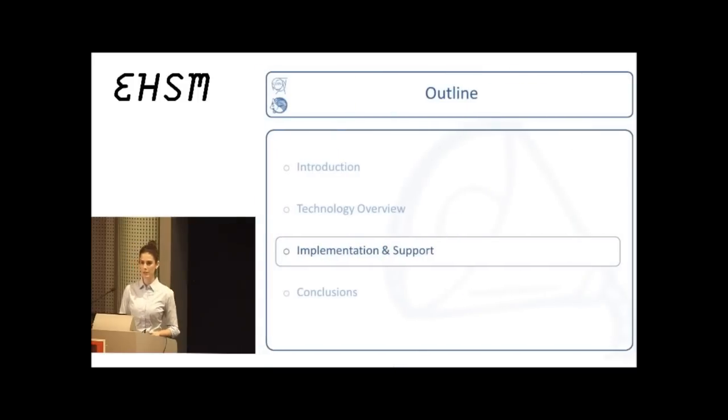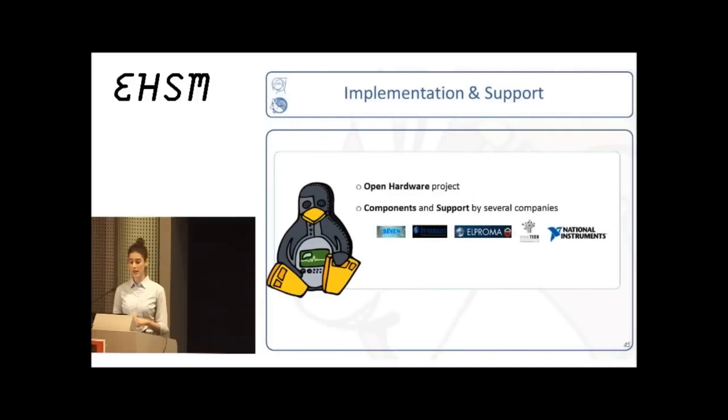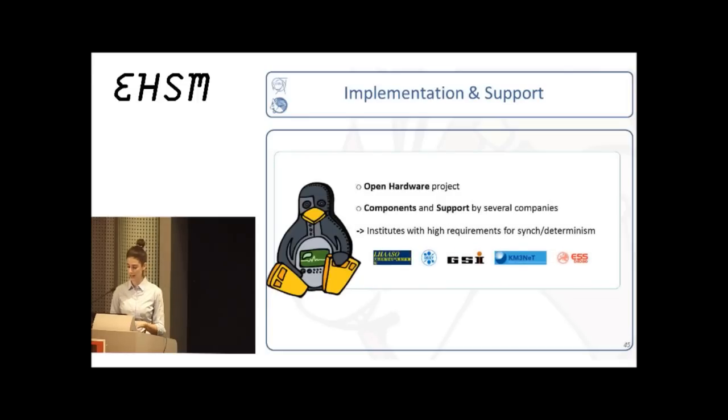Let's continue now with the implementation and support. So, as we have seen yesterday, White Rabbit is part of the open hardware repository, so all the design files and source code are publicly available. The components of the White Rabbit network are available from several different companies, and support is also provided by them. And several institutes, like LASSO in China, Cosmic Ray Observatory, and the KM3Net, a neutrino detector in the bottom of the Mediterranean, are some of the users of White Rabbit technology.